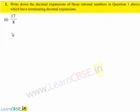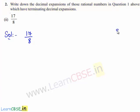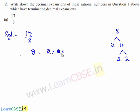Now let us move on to the second rational number that has a terminating decimal expansion. The rational number is 17 upon 8. To find its decimal expansion, first we shall write the denominator of the given rational number as a product of its prime factors. Therefore 8 can be written as 2 times 4, and 4 can be written as 2 times 2. Therefore 8 can be expressed as 2 times 2 times 2, which is equal to 2 cubed.